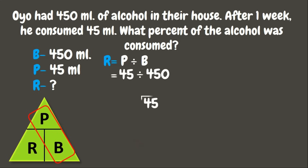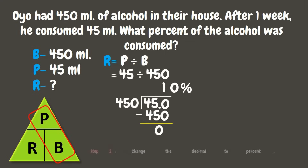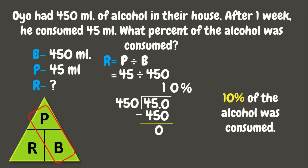Now let's divide. Since 45 is smaller than 450, we cannot divide right away. Let's add 0.0 first. Now we have 450 divided by 450, which is 1. 1 times 450 is 450. That gives us 0. The answer is 0.1. Now let us change the decimal to percent. Move the decimal point 2 times to the right: 1, 2. Since there is an empty place value, let's add 0. Now change the decimal point to a percent sign. Our final answer is 10%. 10% of the alcohol was consumed.